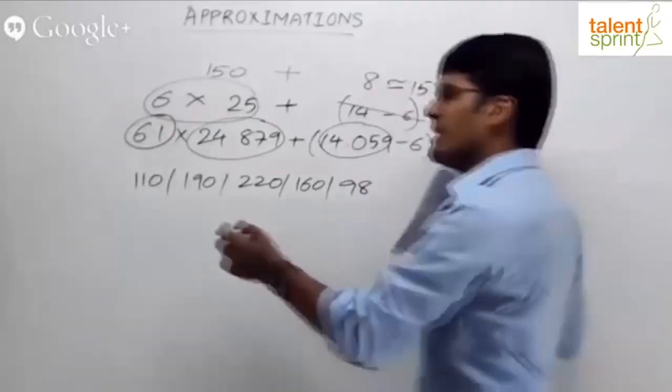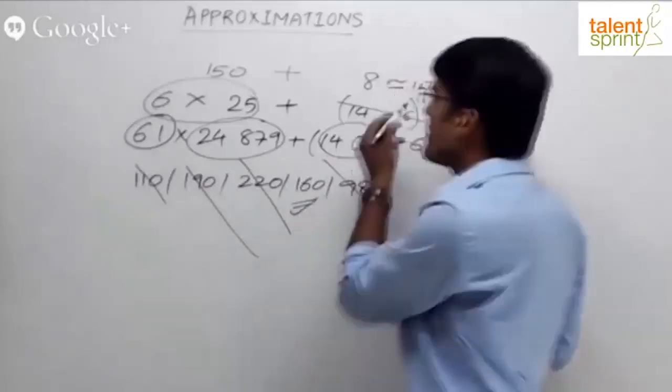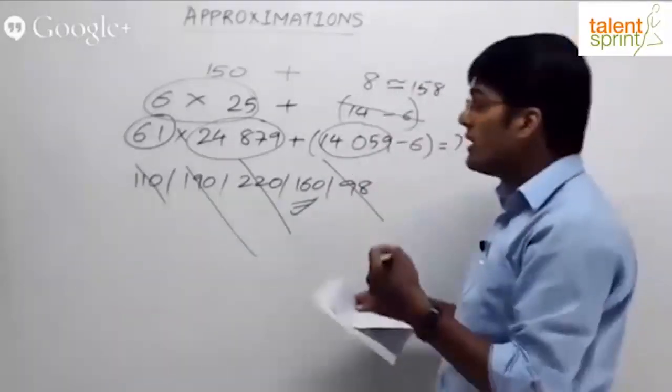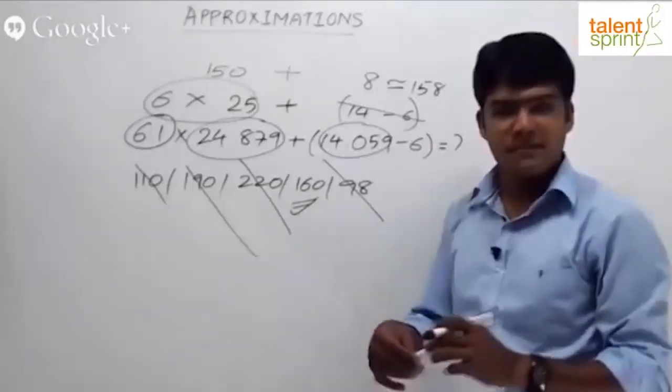Look at the options. 110 is ruled out, 190 is ruled out, 220 is ruled out, 98 is ruled out. 160 is close to 158. And here we do not have to worry about two options being close. There is only one option, so directly you can mark that as the answer.